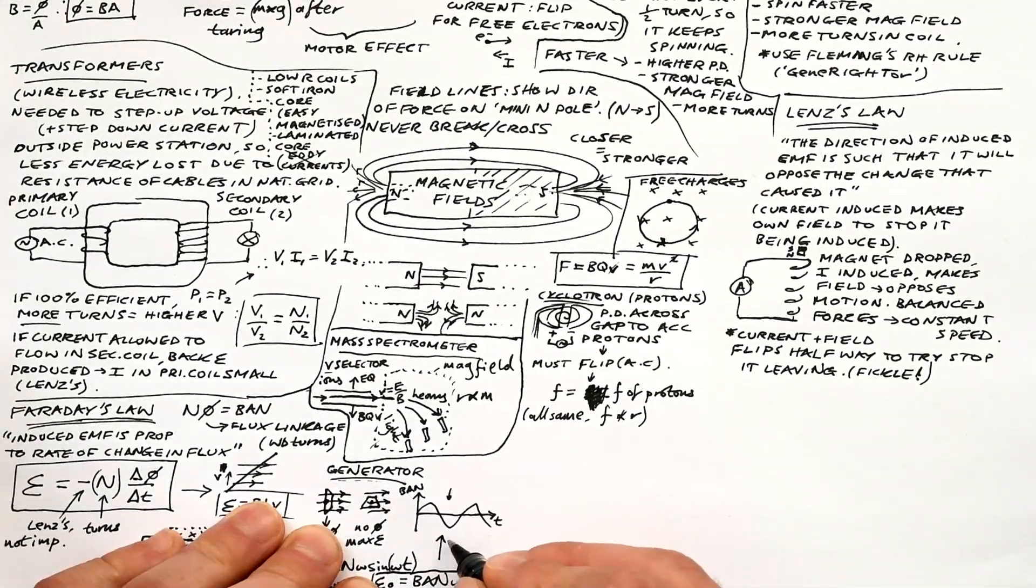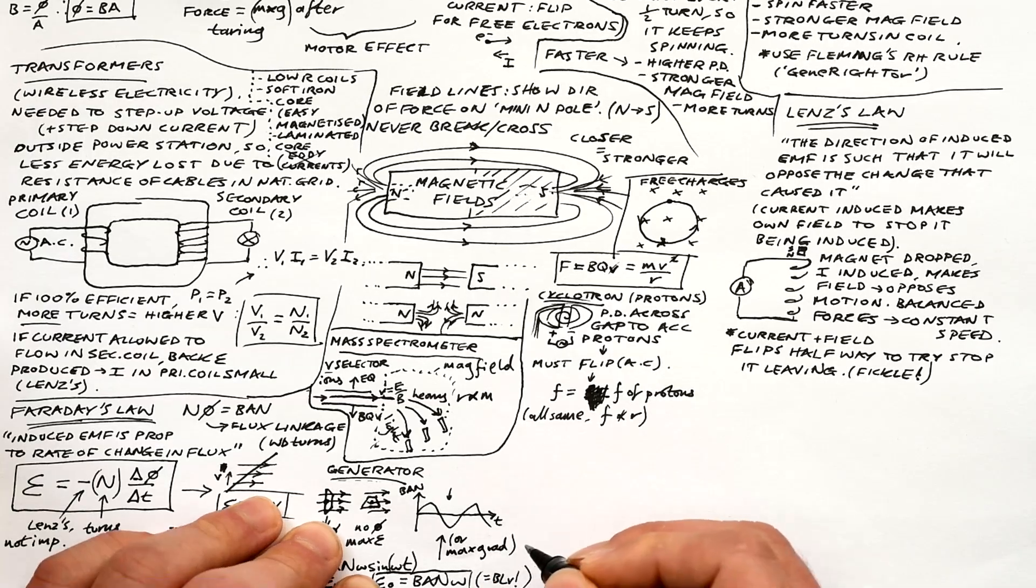Here's a graph of flux linkage ban against time. To get the maximum EMF, we can either use ban omega or we can get the gradient when we have no flux linkage. That's the maximum gradient. Much more accurate to use the equation though.